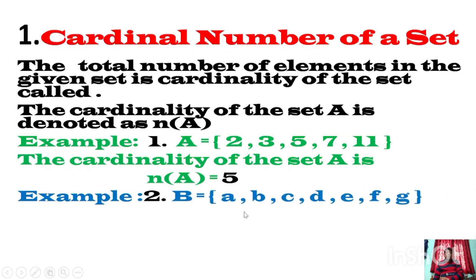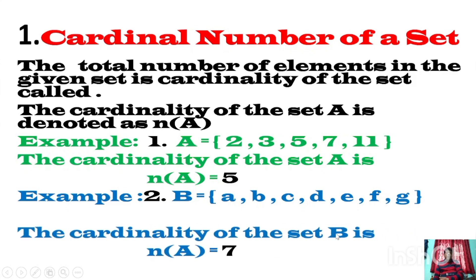Another example: suppose set B contains A, B, C, D, E, F, G. How many elements are there? 1, 2, 3, 4, 5, 6, 7. So the cardinality of set B, N of B, is 7.